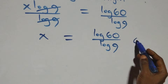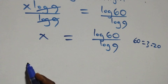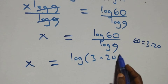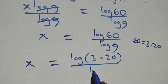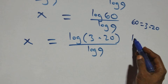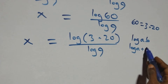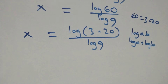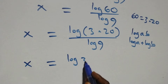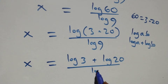The next step, we can express 60 as 3 times 20. What we have here becomes x equals log(3 times 20) over log 9. This follows the log product rule: log(a times b) is the same as log a plus log b. It becomes x equals log 3 plus log 20 over log 9.